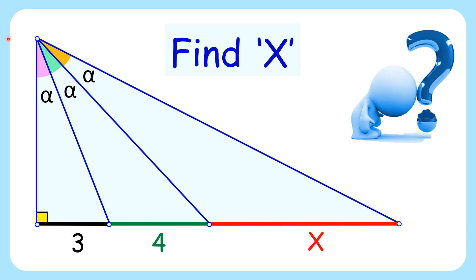In this interesting question, given is a right angle triangle where one of the angles is getting trisected. The length of the opposite side is getting divided into 3, 4, and x. Using this limited data, we have to find the value of x.